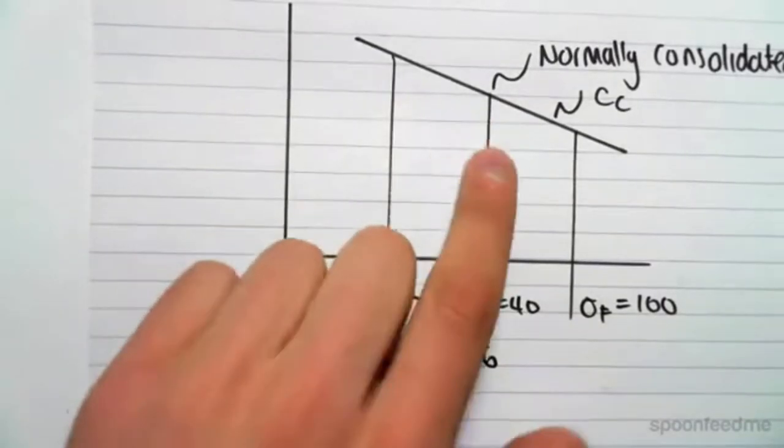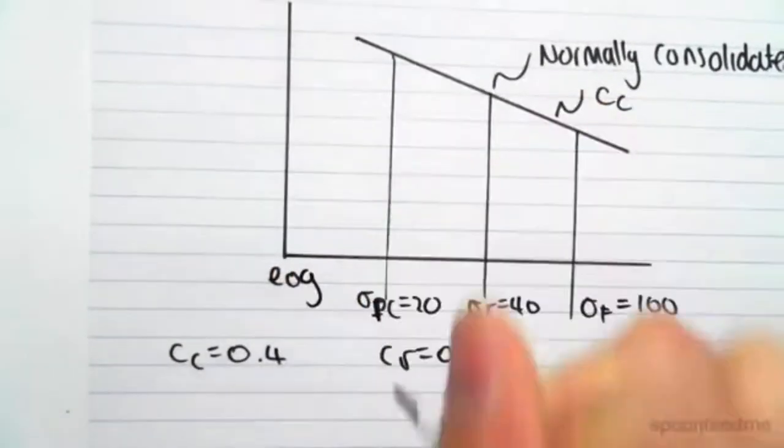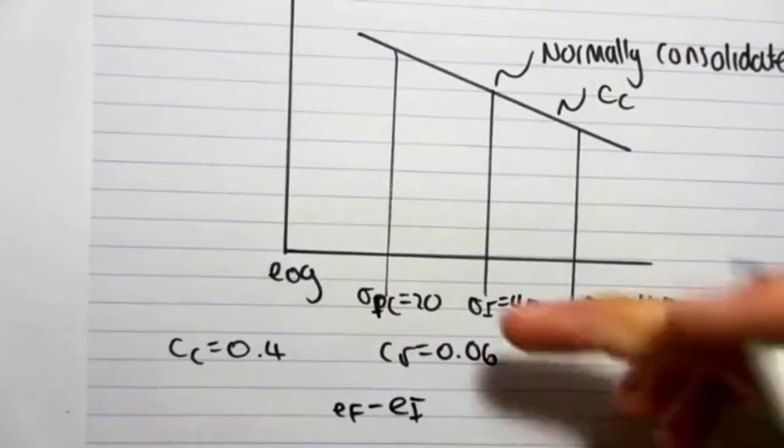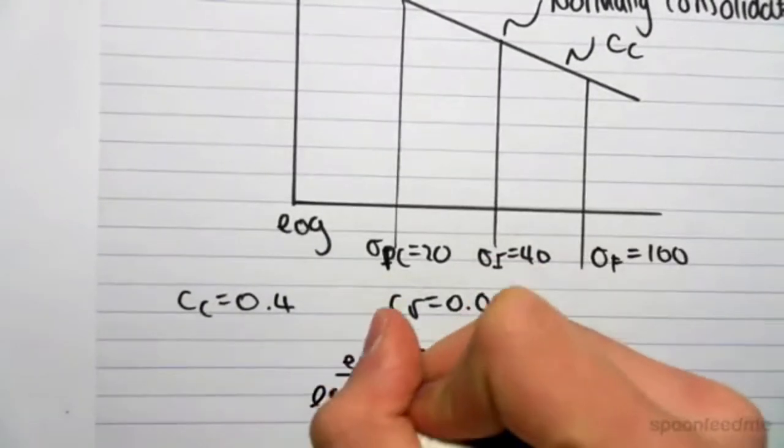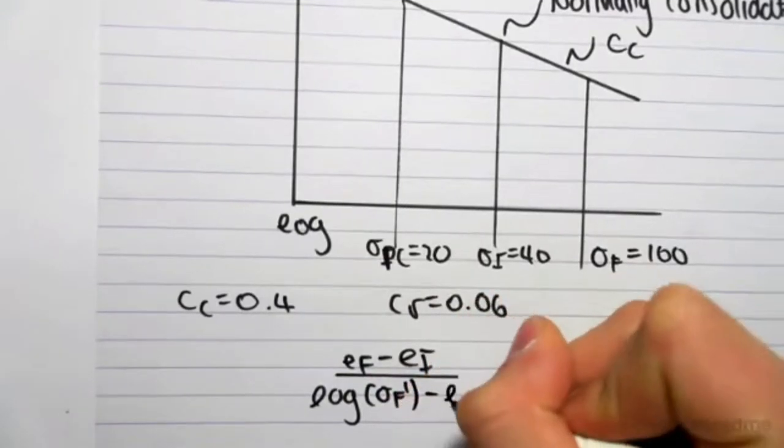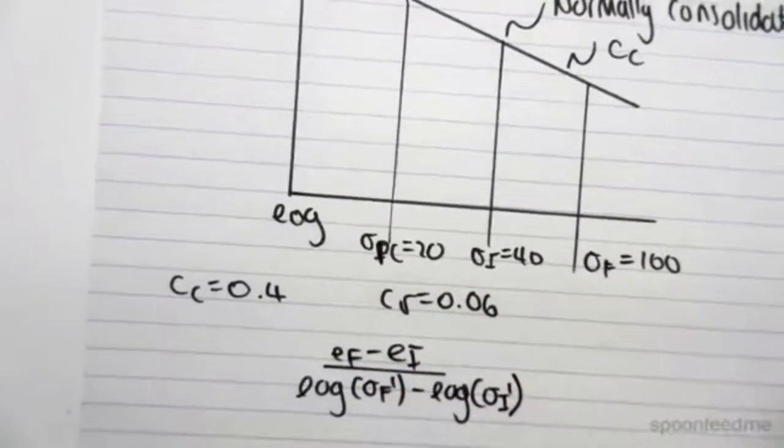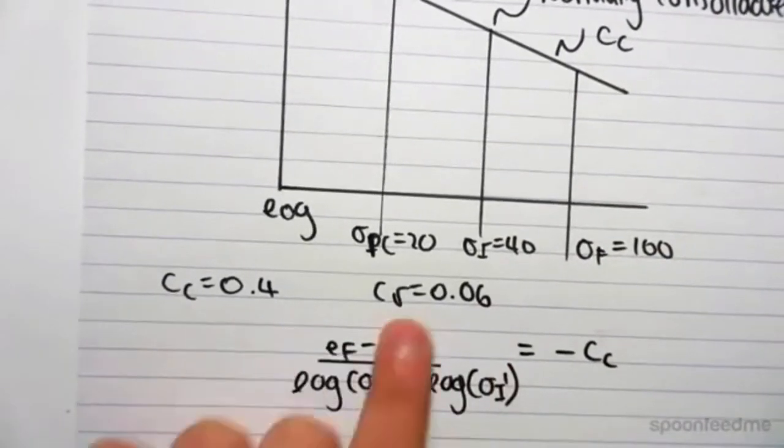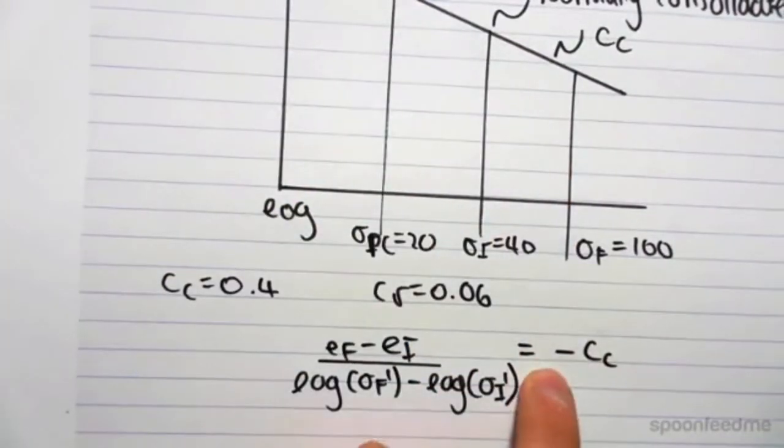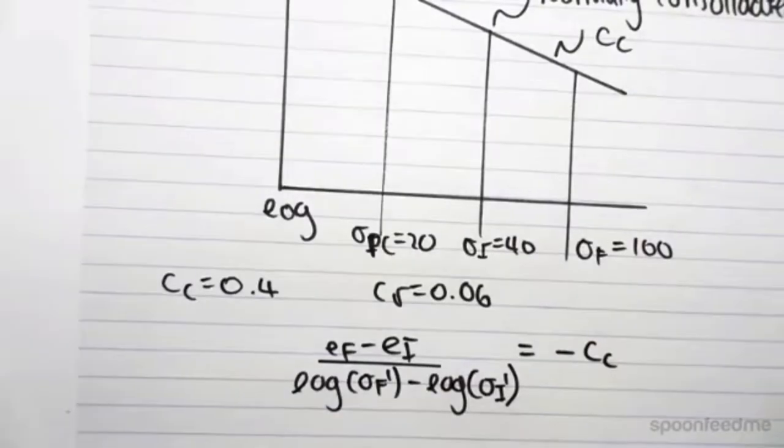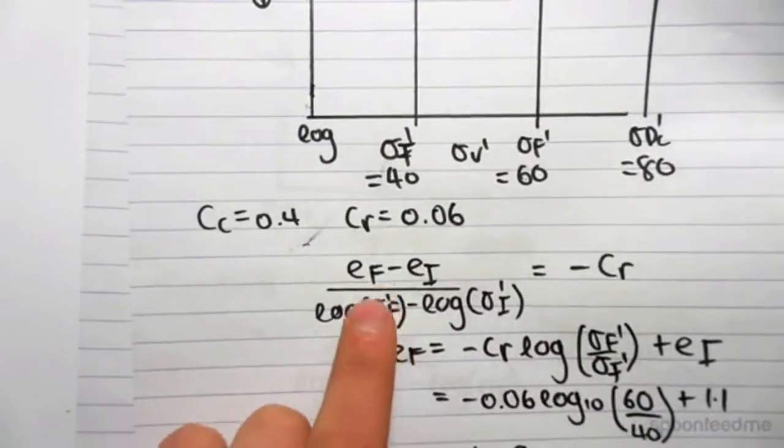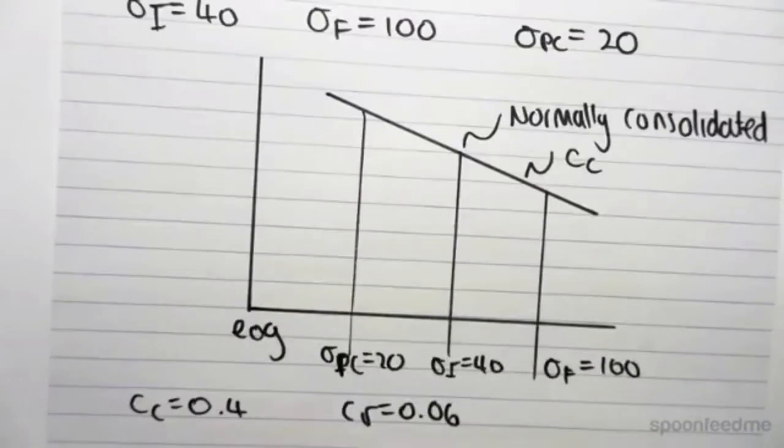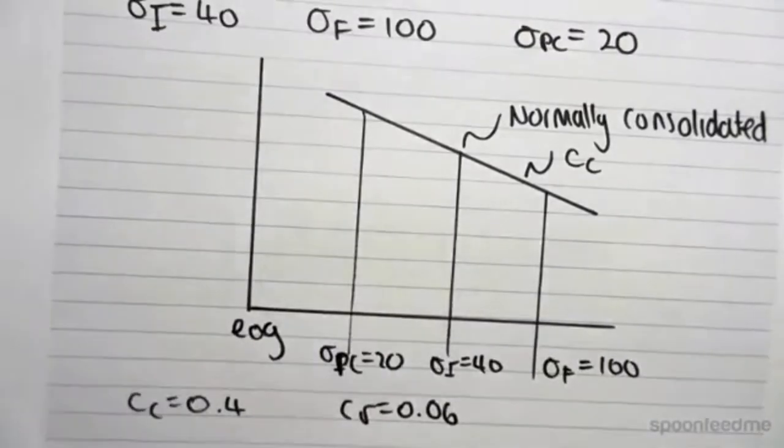So once again, we're going to find the gradient of this line. Remember that this is a log scale. So the gradient we can find is ef minus ei on top of log sigma final dash minus log sigma initial dash. And this is now going to equal minus cc. Once again, we put a minus there because cc is given as positive, because this slope would be negative, and negative times a negative gives us a positive. So the only difference between this and the previous example is that this is cc instead of cr. In this video, we're using cc because our soil is normally consolidated and it's being compressed.